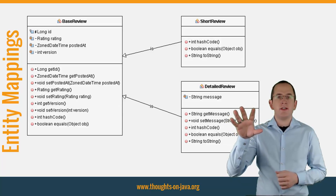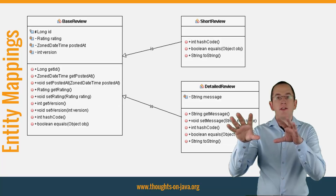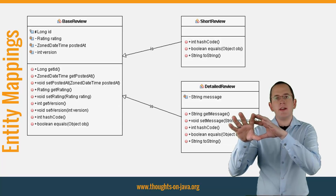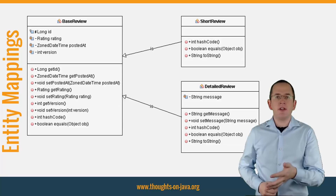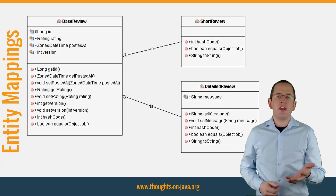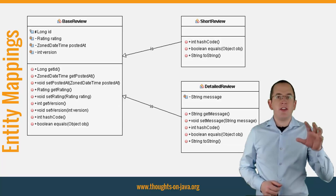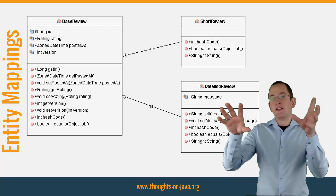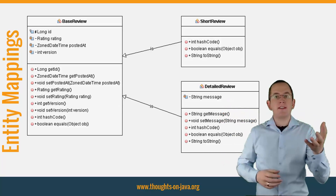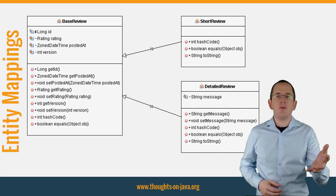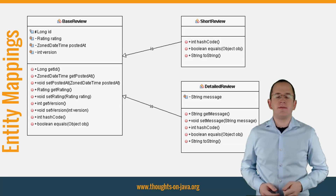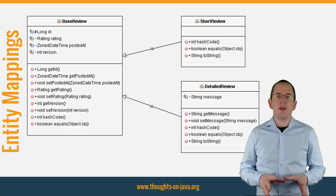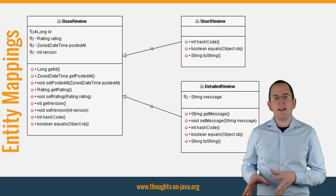Let's apply this concept to the mapping of the review table. The message of a review can be relatively large and I want to be able to load a review with and without its message, so we need 3 classes as you can see in the diagram. The BaseReview class is the superclass of the inheritance hierarchy. Enough theory — let's take a look at the code.